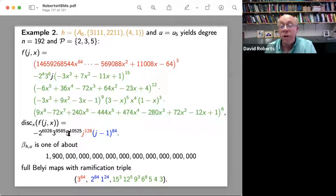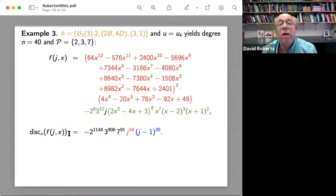So if you look at the LMFDB formula, this is one of about a decillion. I looked up that word for this talk, full Belyi maps with this particular ramification triple. So John and Sam and your group, don't expect an email from me. You're not going to be able to compute all of them.